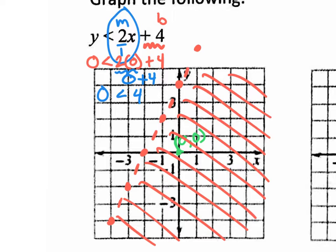There's also a shortcut: when the inequality says 'less than' in slope-intercept form, you shade below the line. Greater than means above, less than means below. If you like the shortcut, use it. Otherwise, test the point (0, 0) to figure out which side to shade.